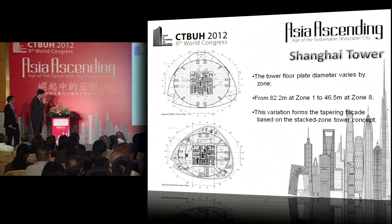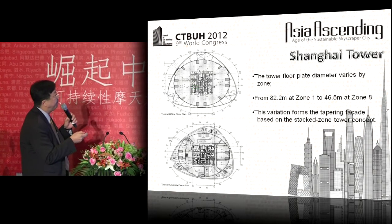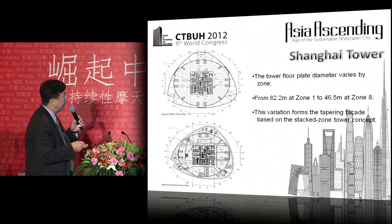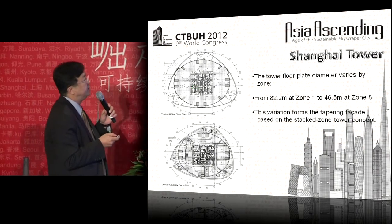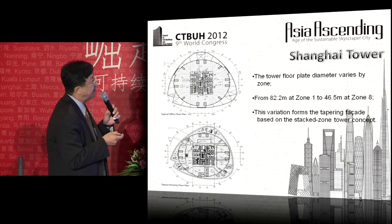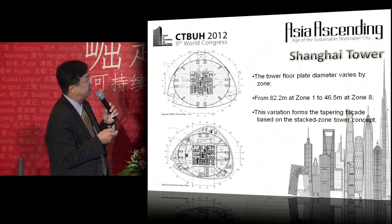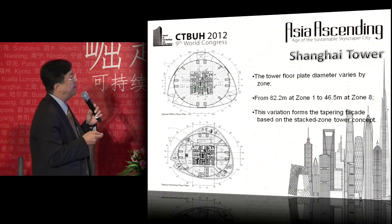You can clearly see the entire floor plan of the tower. On the standard floors it is circular in shape. On the mechanical equipment and shelter zone floors, it is triangular in shape. The diameter ranges from 82.2 meters at Zone 1 all the way to 46.5 meters at Zone 8.